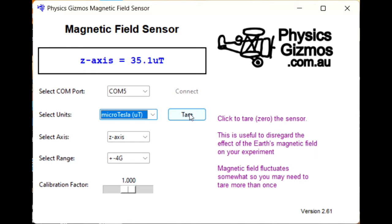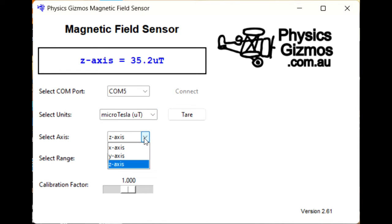You can tare the instrument, zero it, and that's particularly useful if you want to ignore the Earth's magnetic field when you're doing an experiment. You can sort of cancel that out.